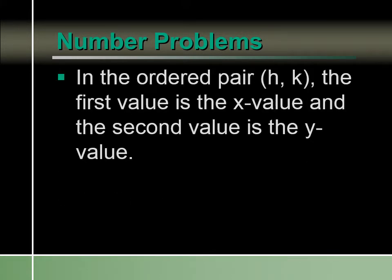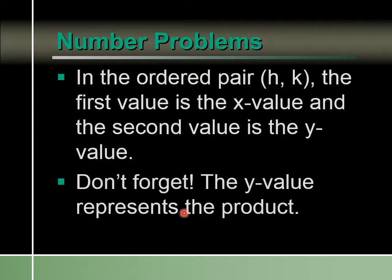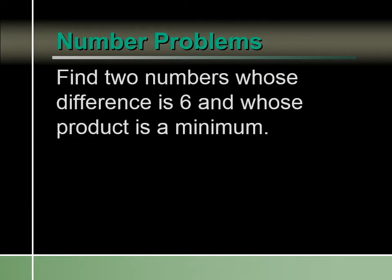Remember, in the ordered pair (h, k), the first value is the x value and the second value is the y value. The x value tells us what our first number is, but the y value doesn't tell us the second number — the y value stands for the product. So to find two numbers whose difference is 6 and whose product is a minimum, we have 3 times a number equal to negative 9, giving us 3 times negative 3 equals negative 9. So those are our two numbers.